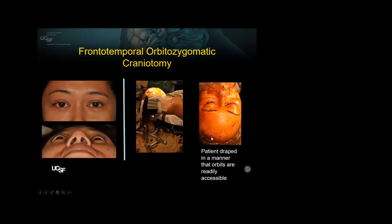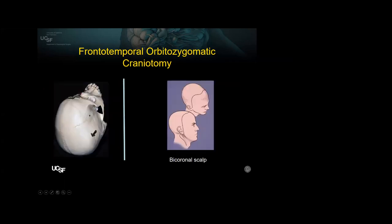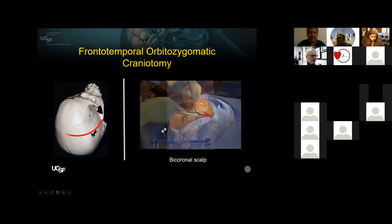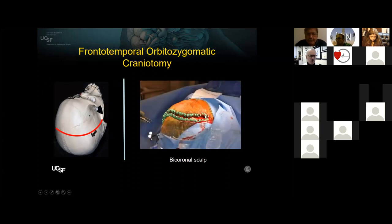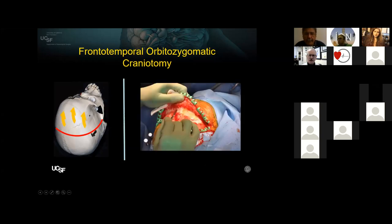The patient is draped in the usual manner. We do a tarsorrhaphy and put ophthalmic ointment into the eyes. The eyes are exposed for the procedure so we can look at the position of the globe intraoperatively after reconstruction. Here's what the patient looked like before the operation — tumor on the right side. Typical coronal scalp incision with standard methods. I prefer the green Raney clips, which have less closing force than the blue ones, so there's less chance of scalp necrosis during long operations.